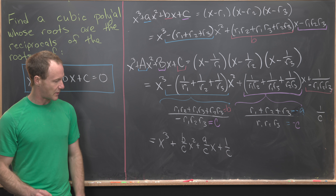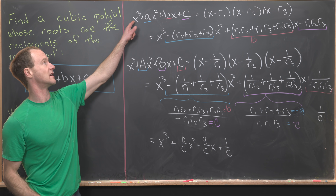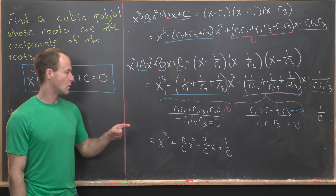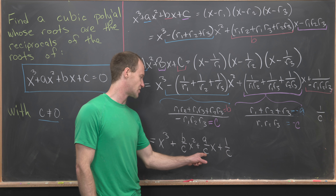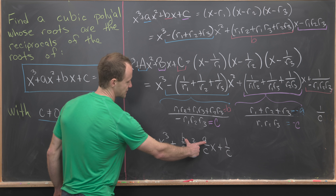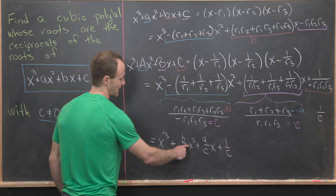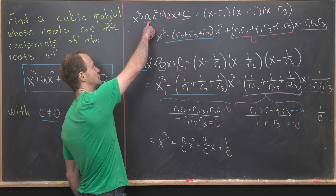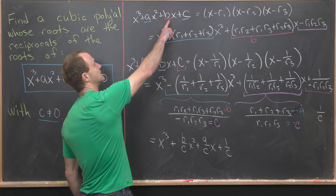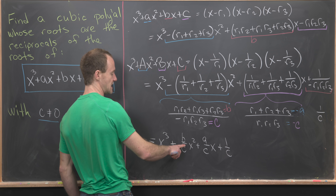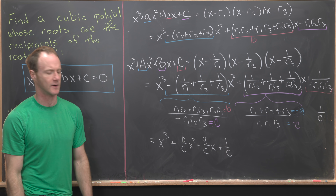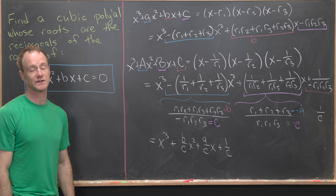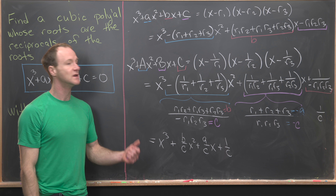Putting it all together, the polynomial whose roots are the reciprocals of our original polynomial is x cubed plus (b over c) x squared plus (a over c) x plus 1 over c. Notice the nice structure: we're dividing by c everywhere, and the coefficients have switched — the coefficient of x squared was originally a, but that switched to the coefficient of x, and the coefficient of x was originally b, which switched to the coefficient of x squared.